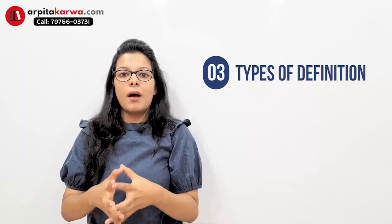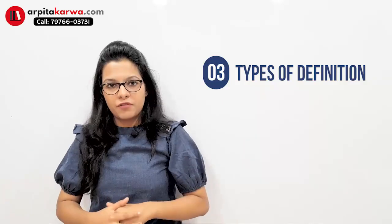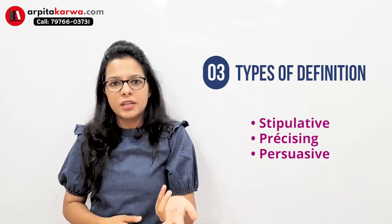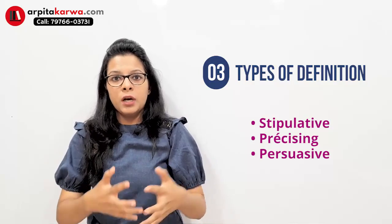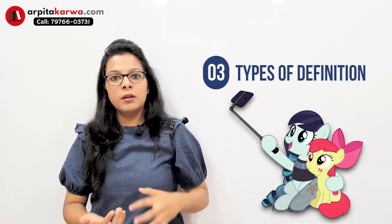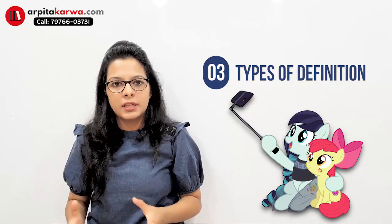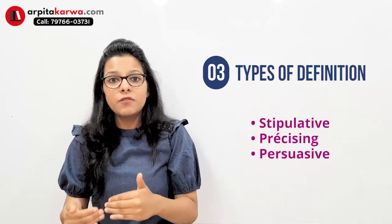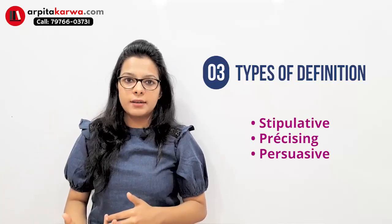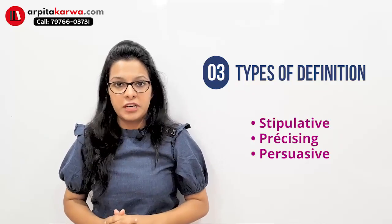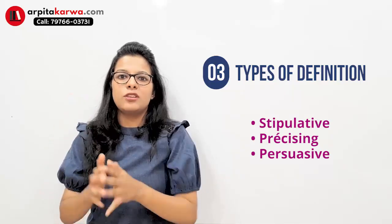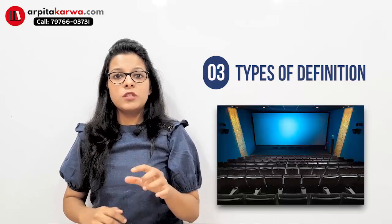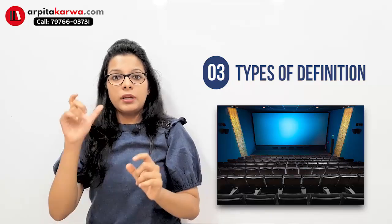The next kind of theoretical question you might see concerns types of definitions, which also come under logical reasoning. There are various types, and the common ones are: first, stipulative definition — a definition coined for new things. For example, 'selfie' is a 21st-century term that didn't exist before, so early dictionaries had no entry for it. A stipulative definition defines newly coined terms. The second kind is a precising definition — a definition suited to a particular situation.